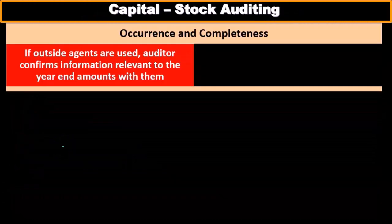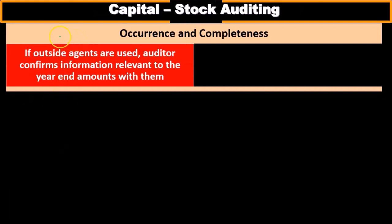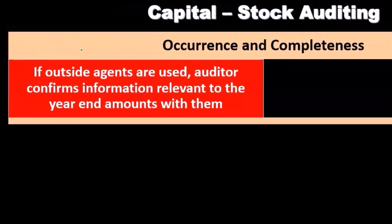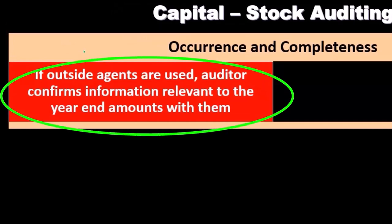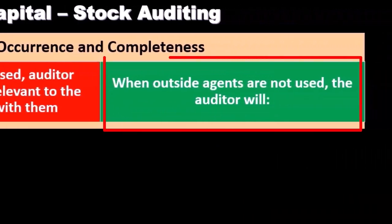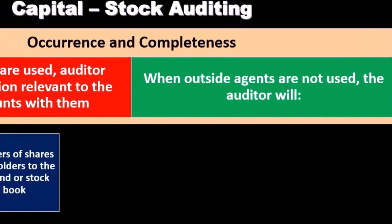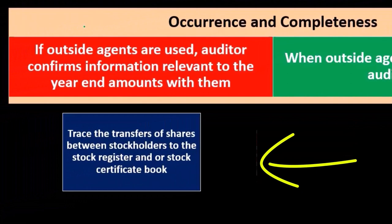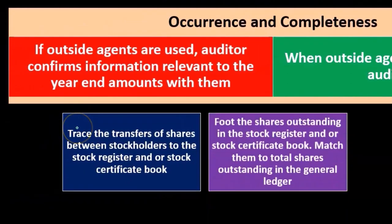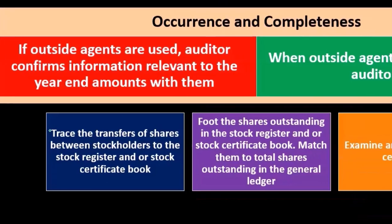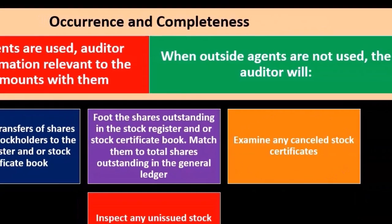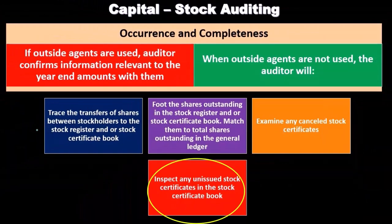Now we consider the auditing of capital stock under the assertion of occurrence and completeness. If outside agents are used, the auditor confirms information relevant to the year and the amounts with them. When outside agents are not used, the auditor must trace transactions of shares between stockholders to the stock register or stock certificate book, foot the shares outstanding, match them to the general ledger, examine any canceled certificates, and inspect any unissued stock certificates in the stock certificate book.